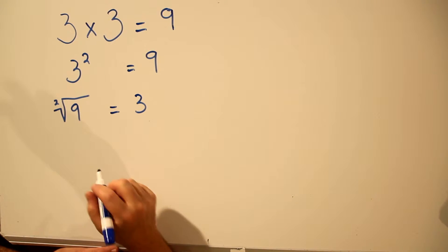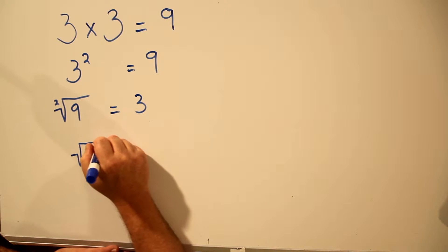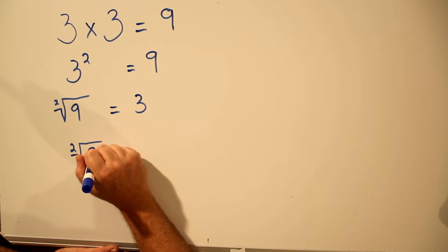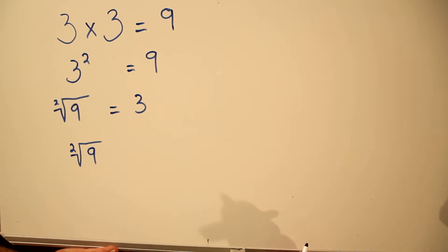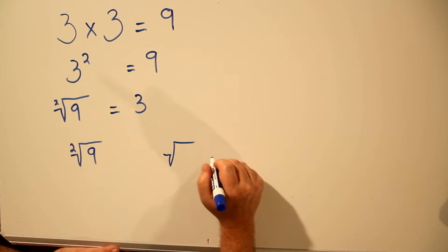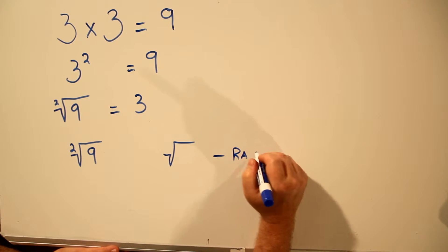So let's look at this symbol for a minute. It kind of looks like long division, but it has a little hook on it, and it has a number on it, and then the number that you're trying to take the root of. So this symbol is called the radical sign, or radical symbol.